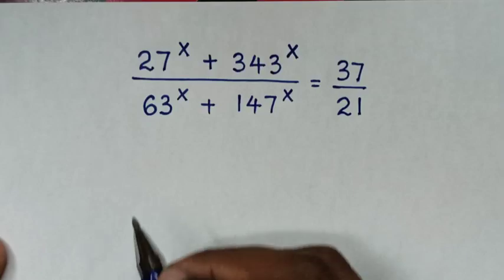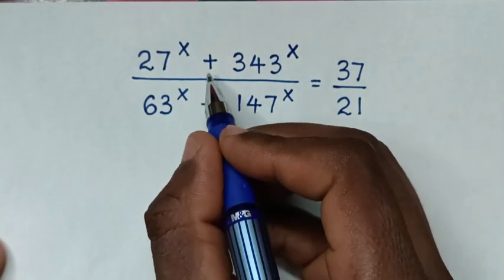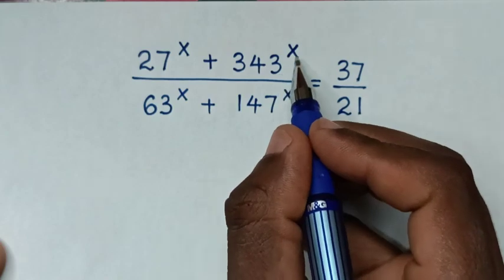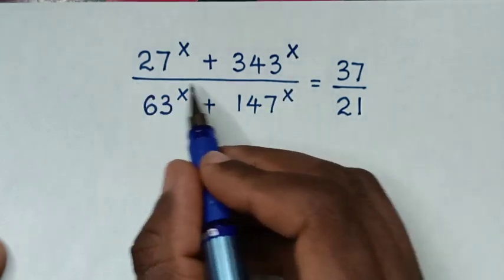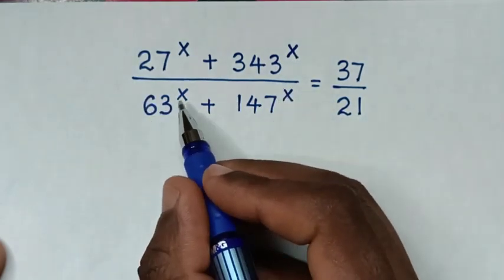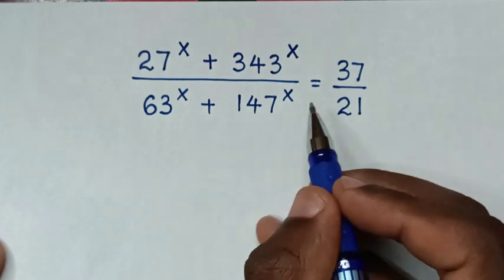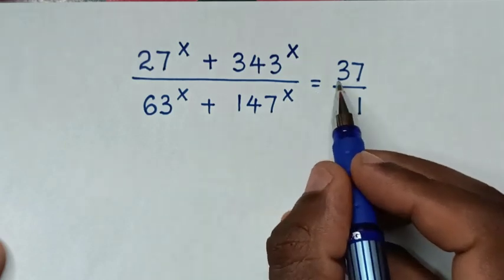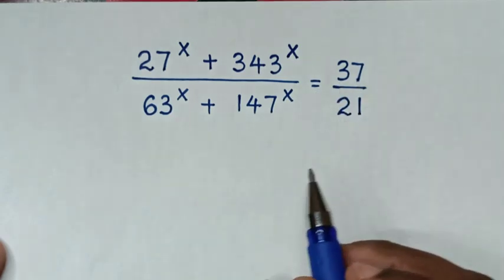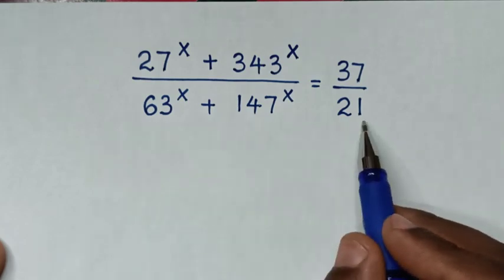Hello. How to solve: (27^x + 343^x) / (63^x + 147^x) = 37/21, to find the values of x from this equation.